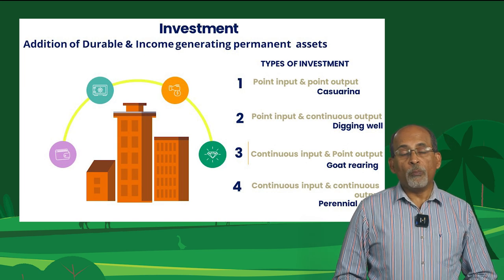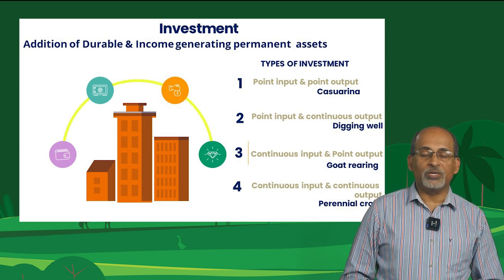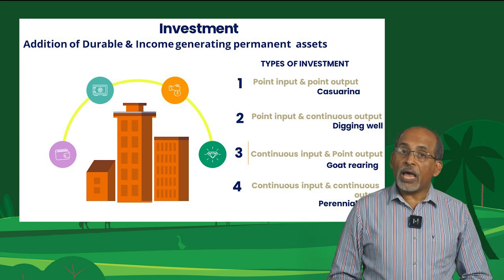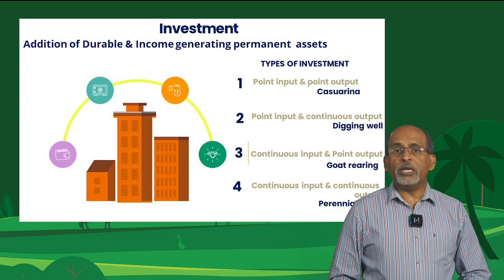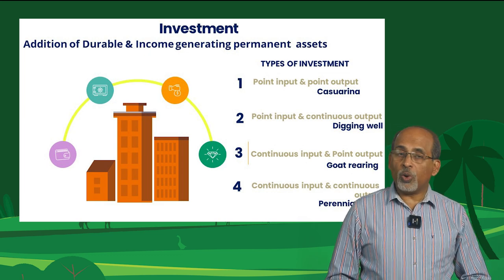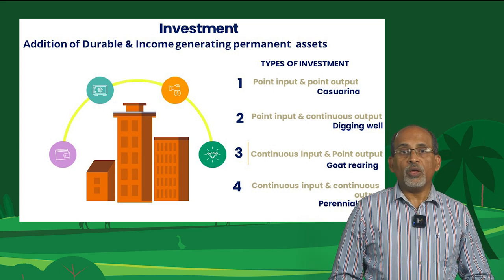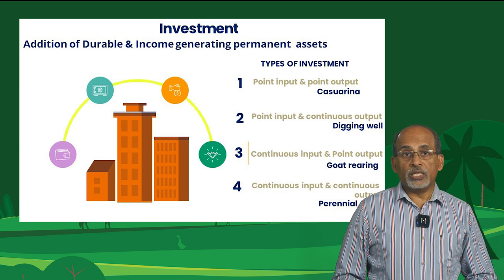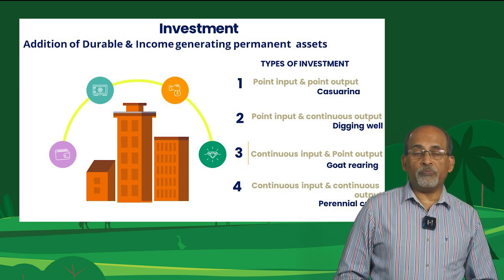The second type is point input and continuous output. For example, digging a well or land reclamation and development. While digging a well, the investment is made once and the returns or output from digging a well will be obtained for many years. The same is the case with land reclamation and development.